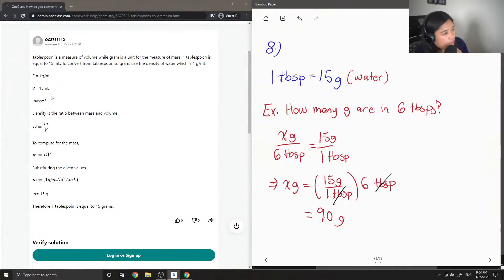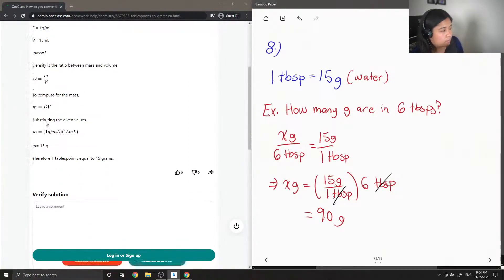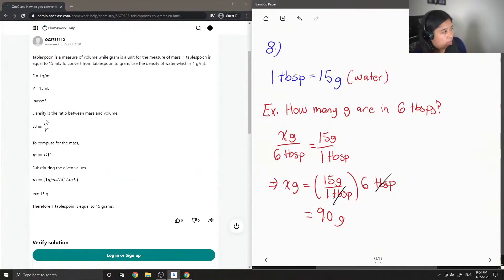Density of water, 1 gram per mil, volume is 15, mass is unknown. Yeah you can do it this way as well.